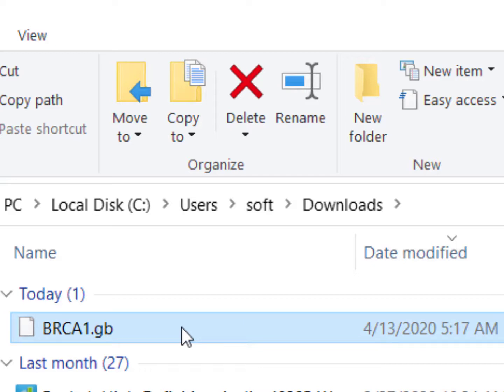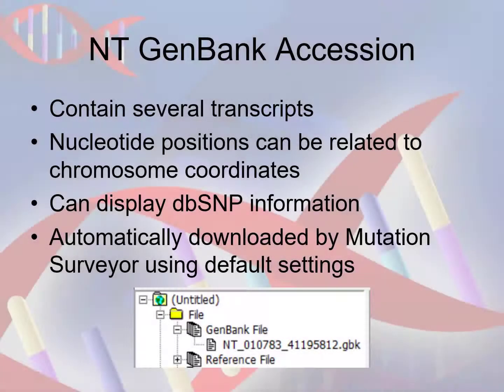The process is similar for NC accessions, with the difference being that NC accessions do not have the option to include dbSNP information. The third accession type we need to cover is the NT accession. NT accessions are the type stored in the database that Mutation Surveyor accesses when downloading GenBank files using the default project settings. They contain all of the available transcripts for the gene, and their nucleotide positions relate to chromosome coordinates. When downloaded by the software, these files contain dbSNP information.